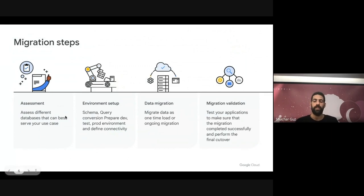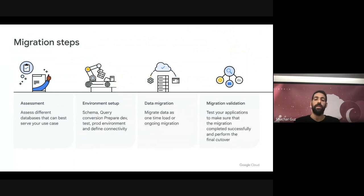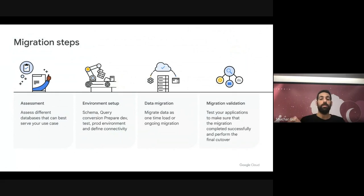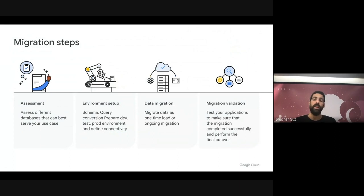In the environment setup phase, they prepare their environment for the migration. That means converting their schema from one engine to another, converting database code, and converting their application code — for example, if the application is written to write to Oracle, they need to move it to write to Postgres. They need to prepare their QA, test, and production environments with test data in order to test the migration before doing a production migration, and define the connectivity. After finishing this step, they have an environment ready for data migration.